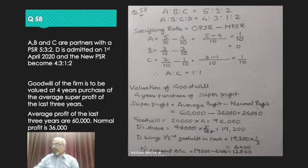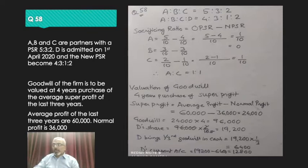Super profit = average profit minus normal profit = 60,000 minus 36,000 = 24,000. So 24,000 is the super profit. The number of years purchase given is 4, so 24,000 × 4 gives us 96,000. So 96,000 is the value of the goodwill of the firm.